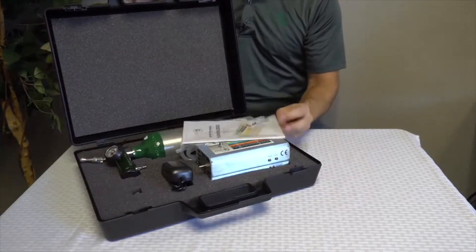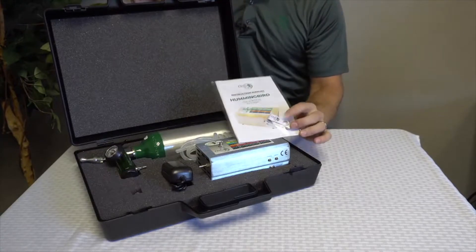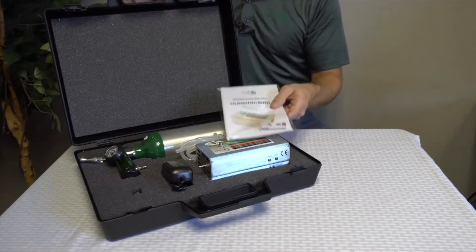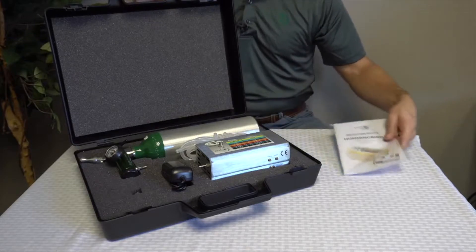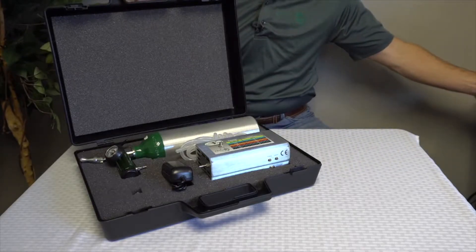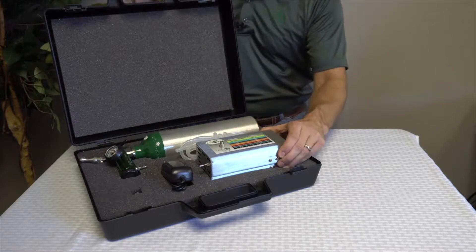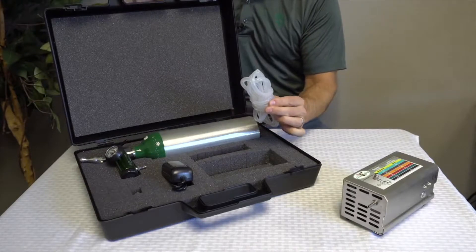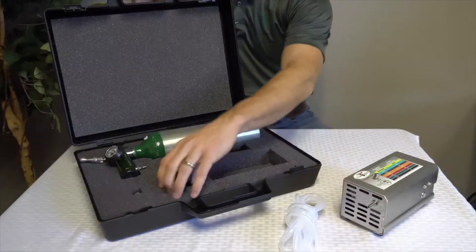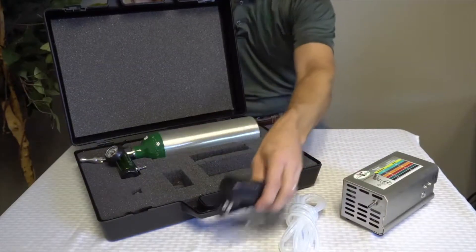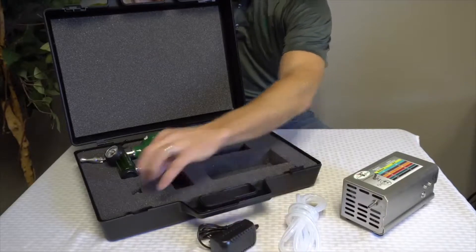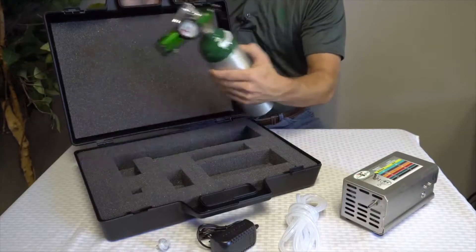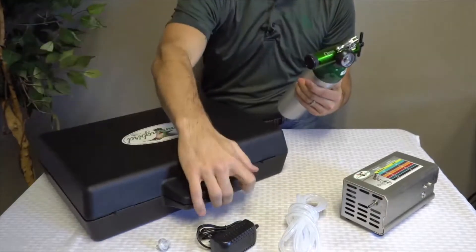The first thing you'll notice is that you have a manual with a flash drive. The flash drive has setup instructions and videos on it, so that will be helpful. Of course, you've got your ozone generator, oxygen tubing, a power cord, a hydrophobic valve, and your oxygen tank and regulator.